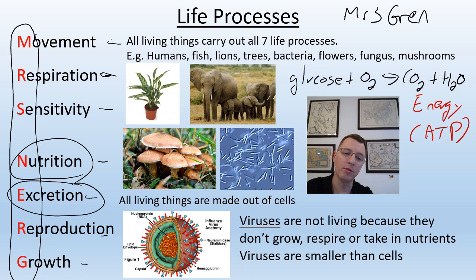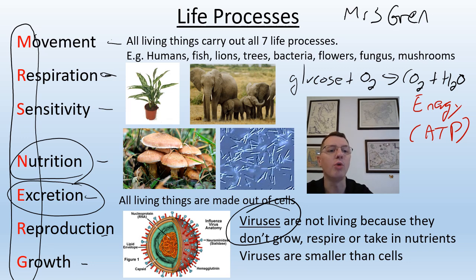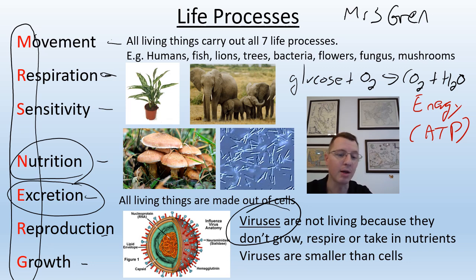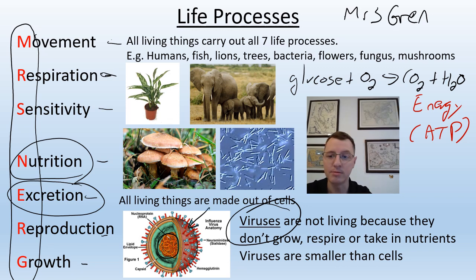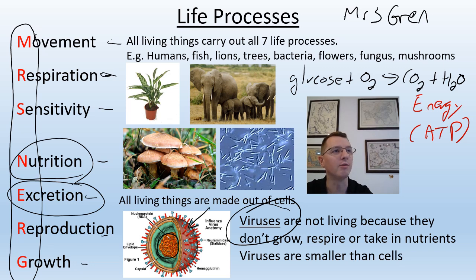Viruses are not living things because they do not carry out all seven life processes - for example, they don't respire, they don't grow, and they don't take in any nutrients. Viruses are incredibly small, much smaller than bacteria cells, and are only made of a small section of nucleic acid - either DNA or RNA - surrounded by a protein coat. If you can carry out all seven life processes, you are a living organism.